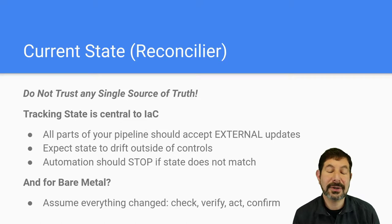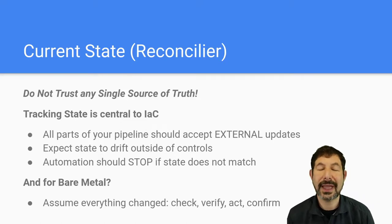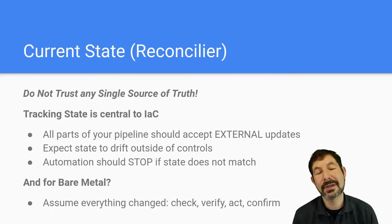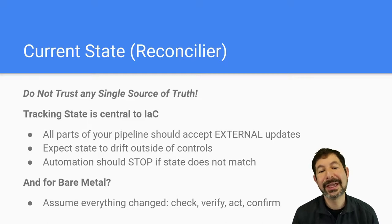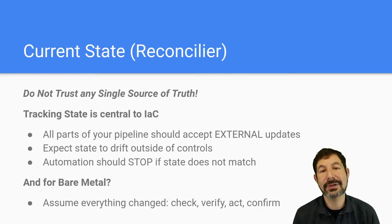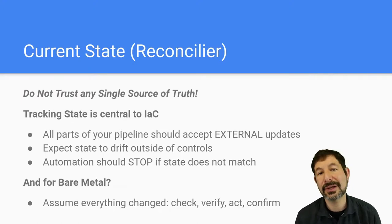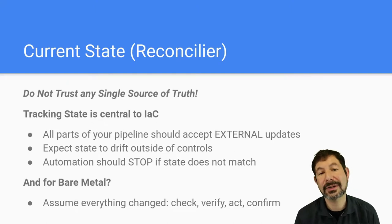For bare metal this is very much a 'check, verify, act, and confirm' process. One of the things we've built into the standard templates — what we call a universal template — is that we check, verify, and confirm as much as possible. The time it takes to do that is minimal compared to the benefits you get from preventing accidental configurations or mistakes, and mistakes in bare metal are very, very expensive.